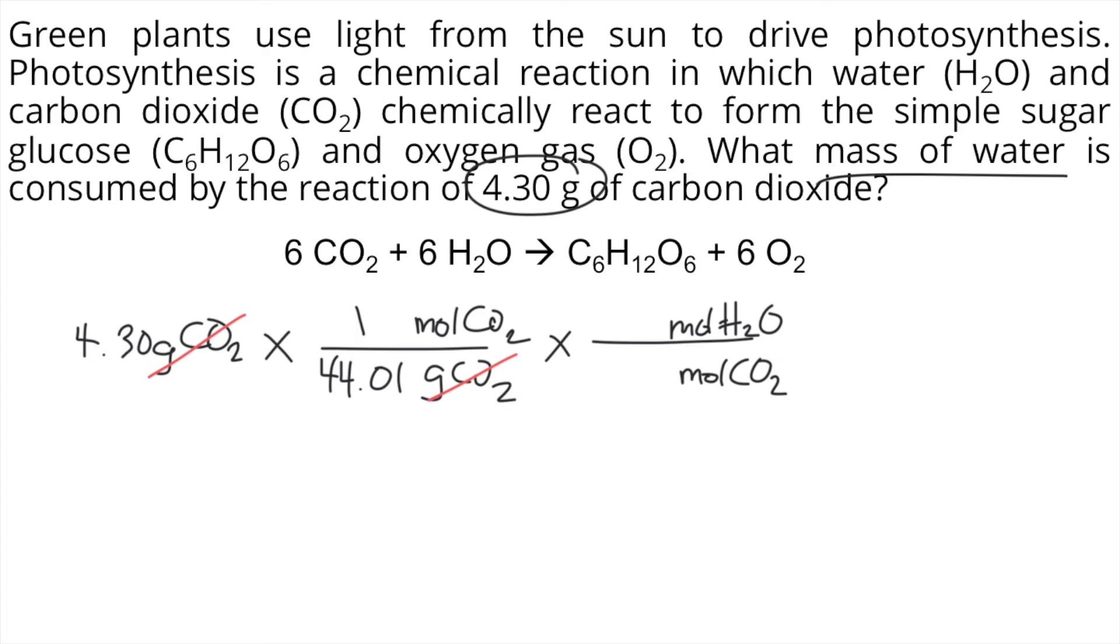So the next step would be to convert the moles of carbon dioxide into moles of water. How do we do that? We look at the chemical reaction. According to the reaction, the mole ratio between carbon dioxide and water is 6 to 6. So 6 moles of water, 6 moles of carbon dioxide. The moles of CO2 will cancel. Now you have moles of water.